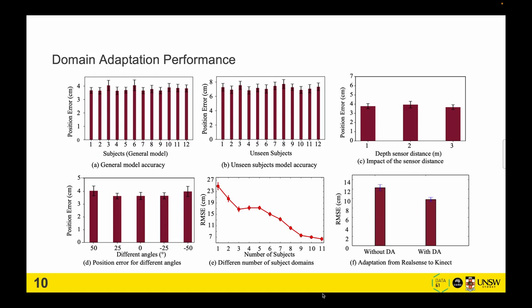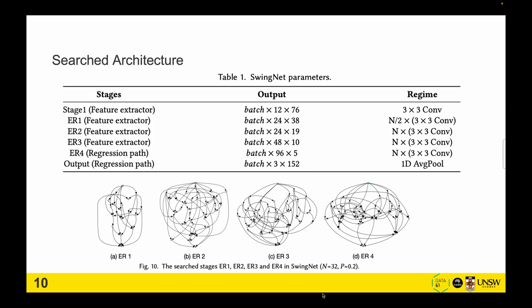For different depth sensor distances and angles, we show that they are not that impactful. We observe that including more subjects, the performance is getting better. Introducing domain adaptation has slightly improved the tracking accuracy from different devices.